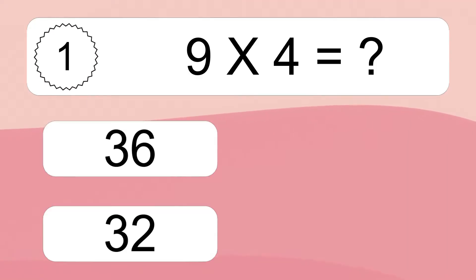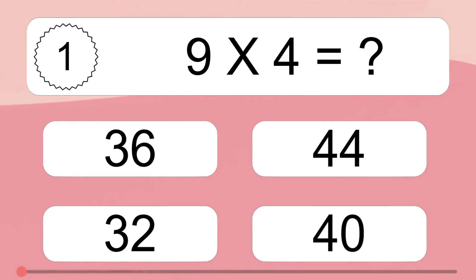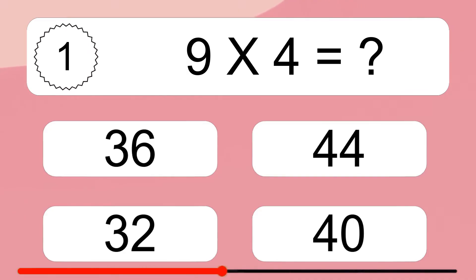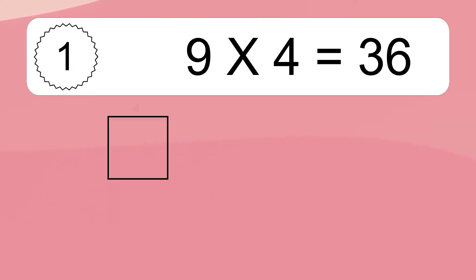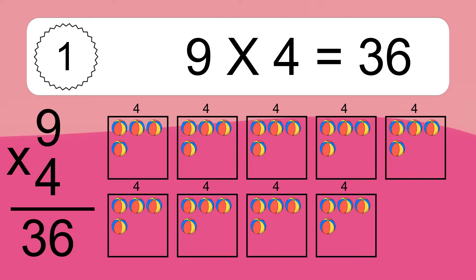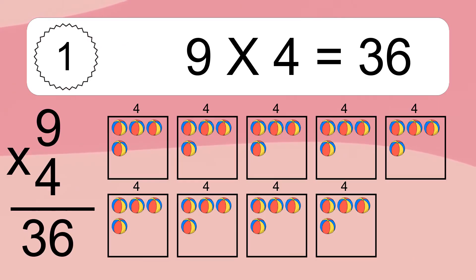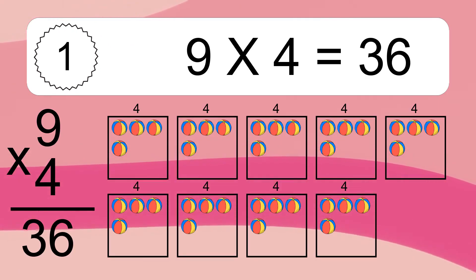9 times 4 equals what? 9 times 4 equals 36. We have 9 boxes, and each box has 4 colorful balls inside. If you count all the balls in all the boxes together, you will have 9 times 4 balls. This equals 36 balls.